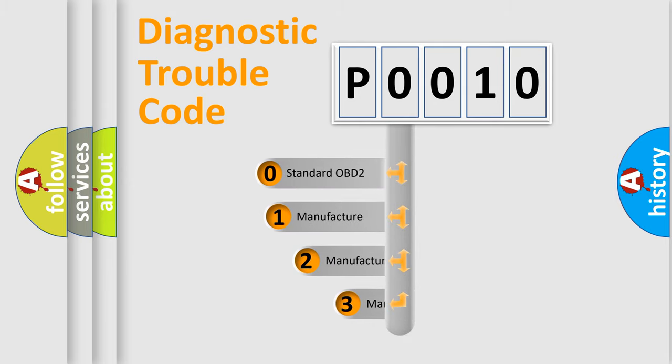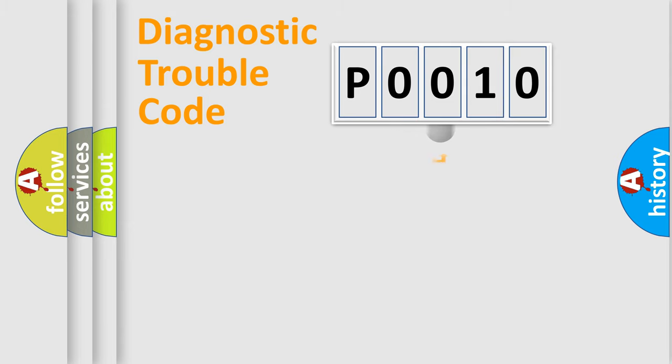If the second character is expressed as zero, it is a standardized error. In the case of numbers 1, 2, or 3, it is a manufacturer-specific expression of the car-specific error.